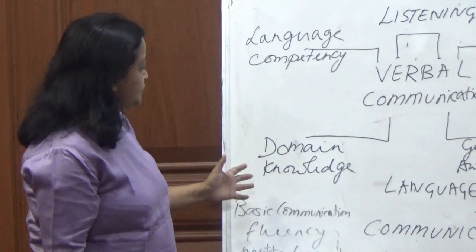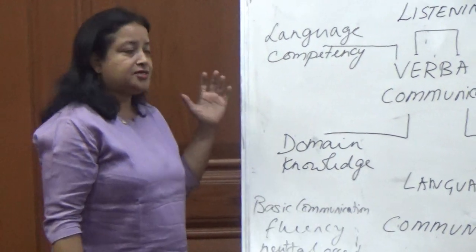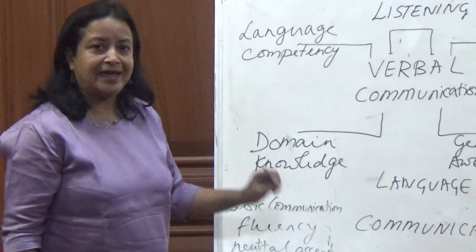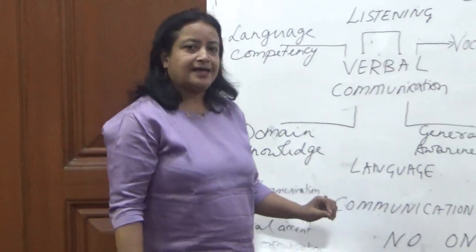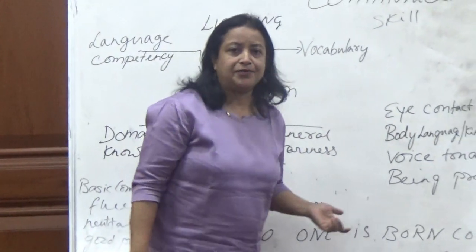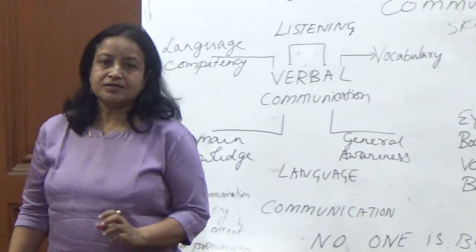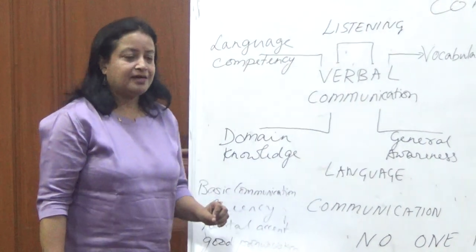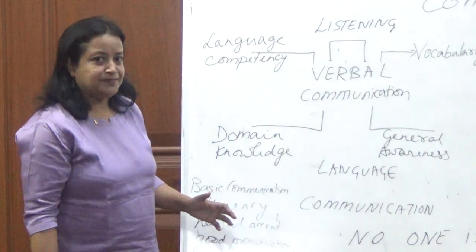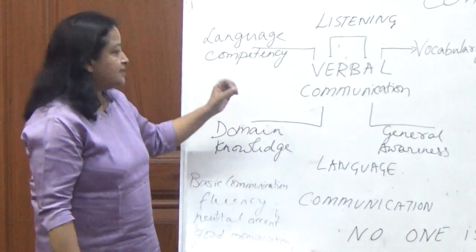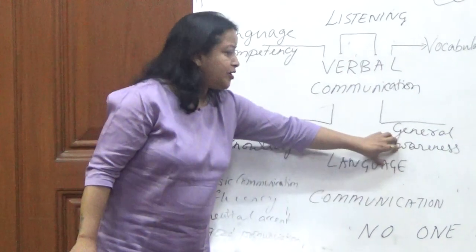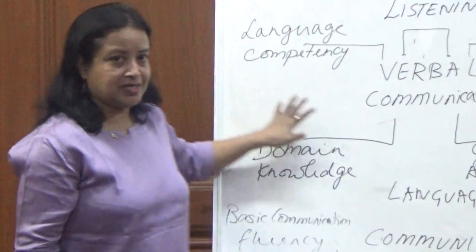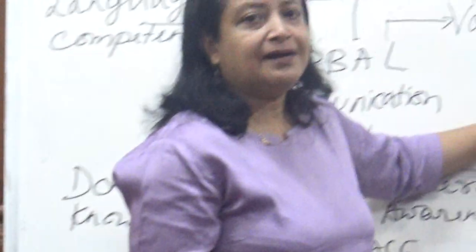Even with domain knowledge and language competency, people still fail — because they lack general awareness. Most students complain that their teachers only give examples from the textbook. The problem is that general knowledge has to be incorporated alongside domain knowledge and language competency. When that happens, vocabulary comes automatically. We don't have to spend a decade of our life learning vocabulary.